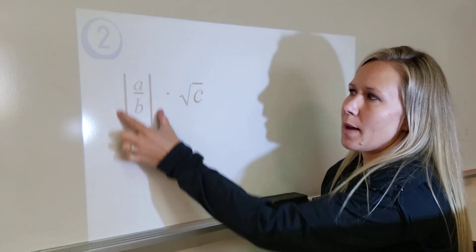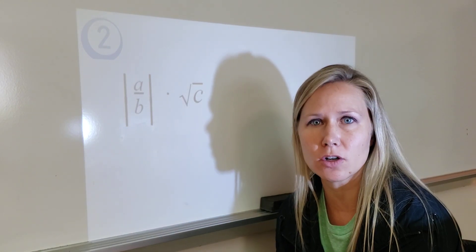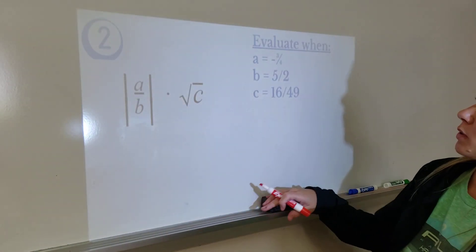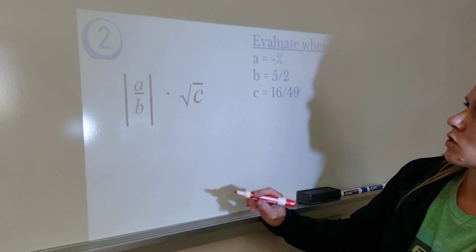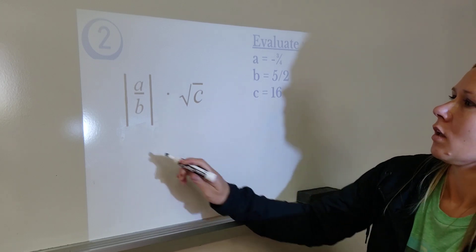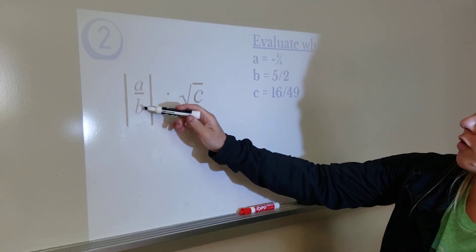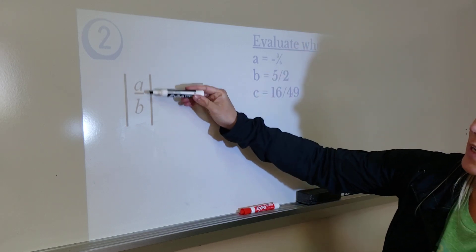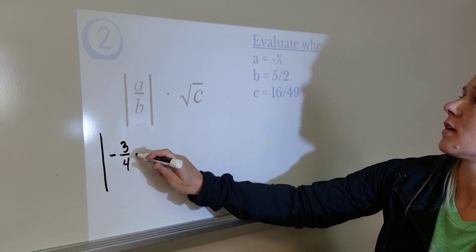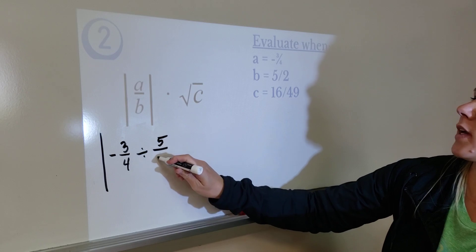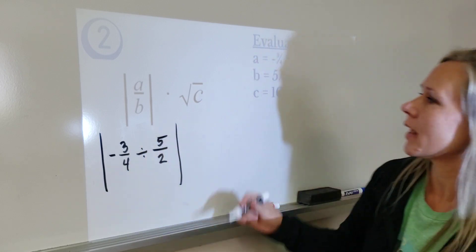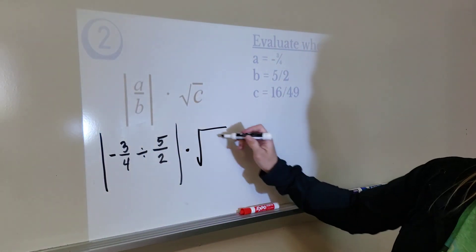Here's example 2. We have absolute value — remember, that means a distance from zero on the number line — and then we're multiplying by the square root of c. I've got division: A over B, taking this divided by this. I'm going to write it horizontally. Absolute value of A divided by B, especially when doing fractions, because I know I'm going to have to do keep, switch, flip. And then I want to multiply that by the square root of c, which is sixteen forty-ninths.